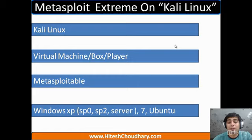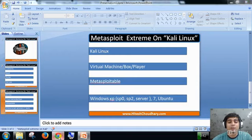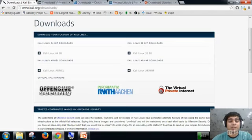Finally, we are going to need a couple of Windows versions. We will be using Windows XP service pack 0, service pack 2, some server edition — you can get 2000 or 2003 — as well as Windows 7 and Ubuntu. It's going to be a great series, using a variety of target machines so we can understand how powerful Metasploitable is. Let's move on to how we are actually going to get them.